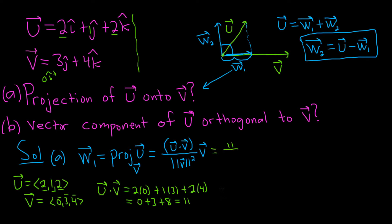Now we need the magnitude of v. The magnitude of v is the square root, and you take each component and square it. So 0 squared plus 3 squared plus 4 squared. That's 9 plus 16. That's 25! So this is 5.